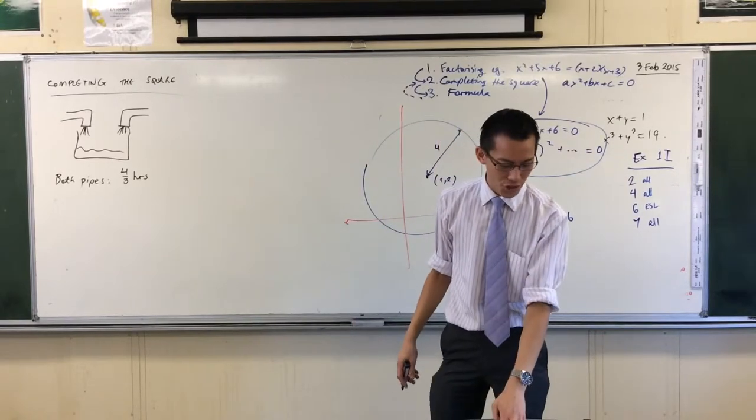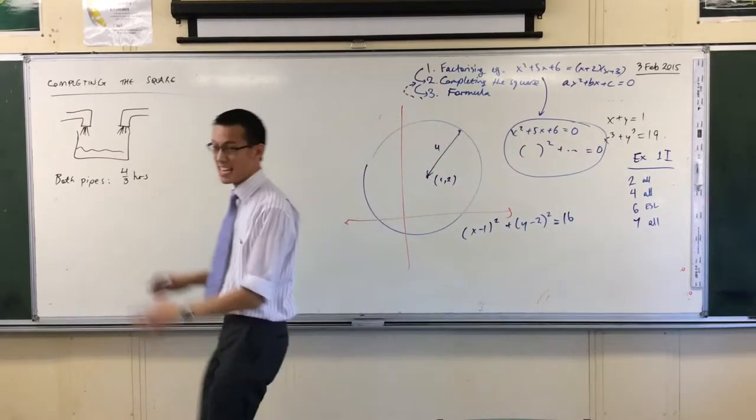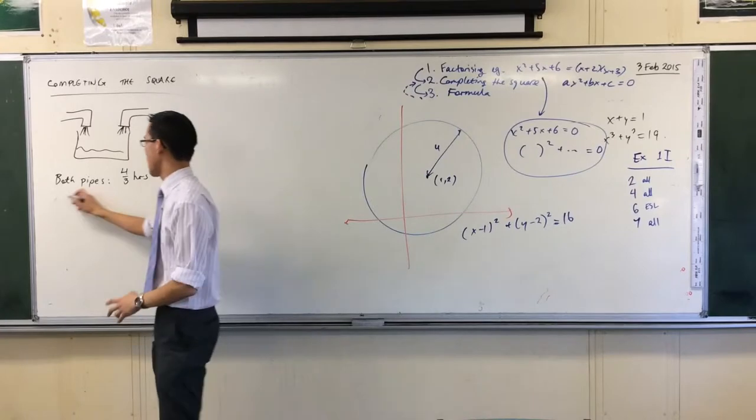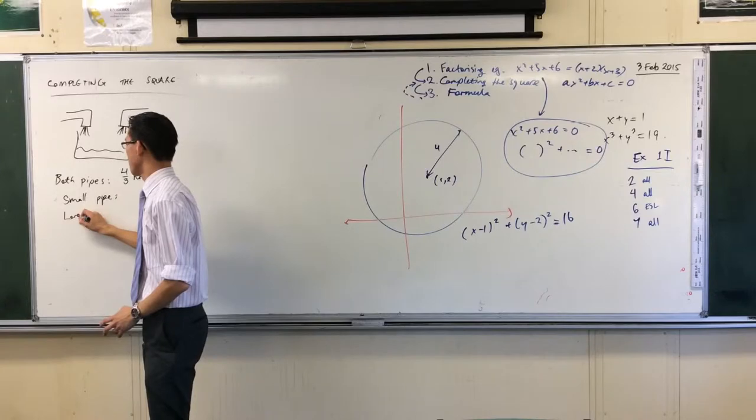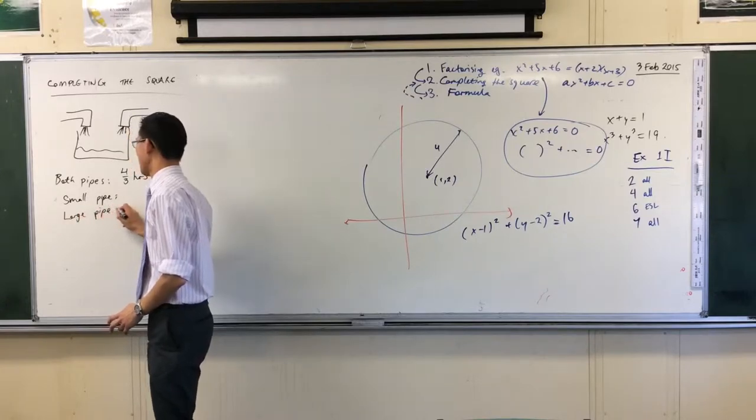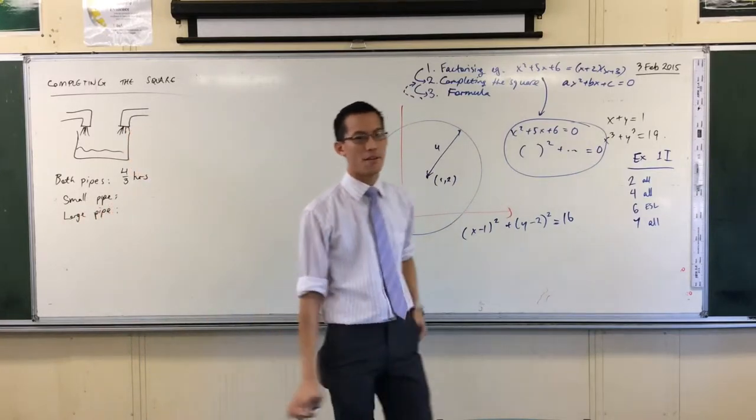Then they tell you information about the other two pipes individually. They say the small pipe and then the larger pipe. Now at this point you must introduce a variable.